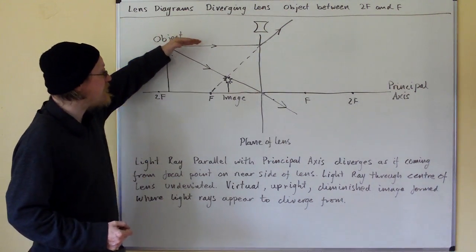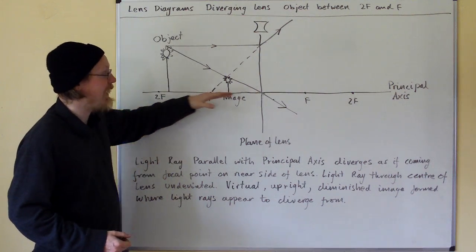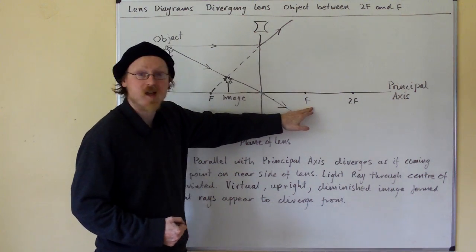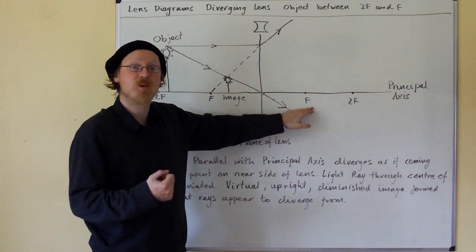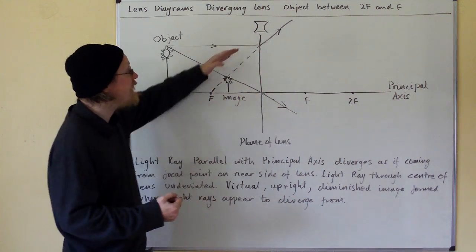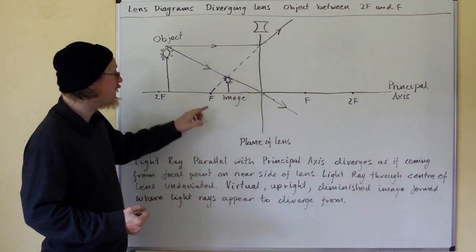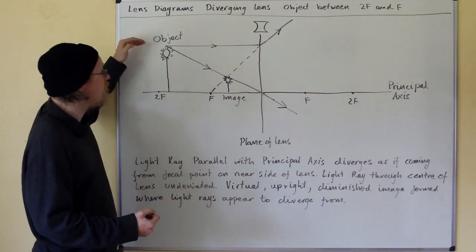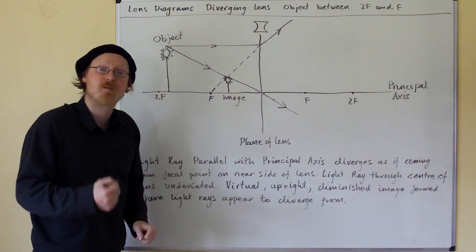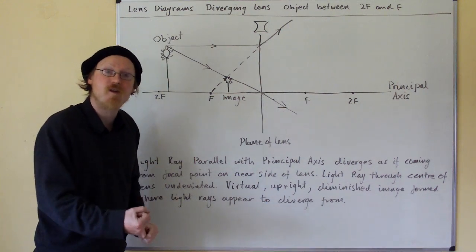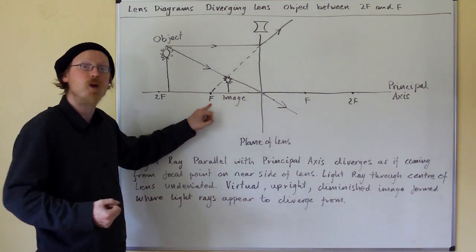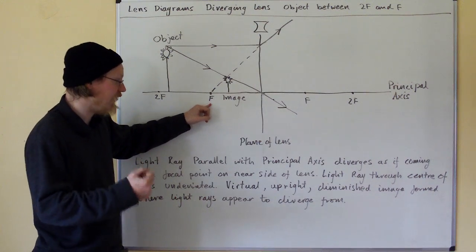Now, the light ray that comes in parallel with the principal axis no longer converges through the far side focal point, which is what happens with a converging lens. Instead it diverges as if it comes from the focal point on the near side of the lens.